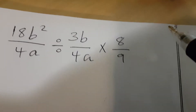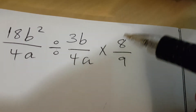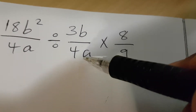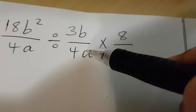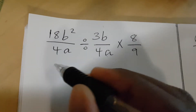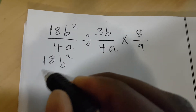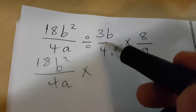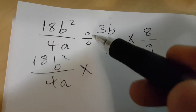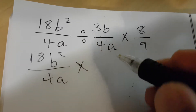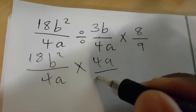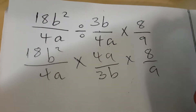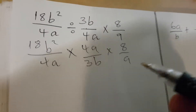The first thing to do is convert this division into multiplication. To do so, look at the fraction coming after the division sign, which is 3B over 4a. You need to swap the denominator and the numerator. So it will be 18B² divided by 4a, times 4a over 3B, then times 8 over 9.